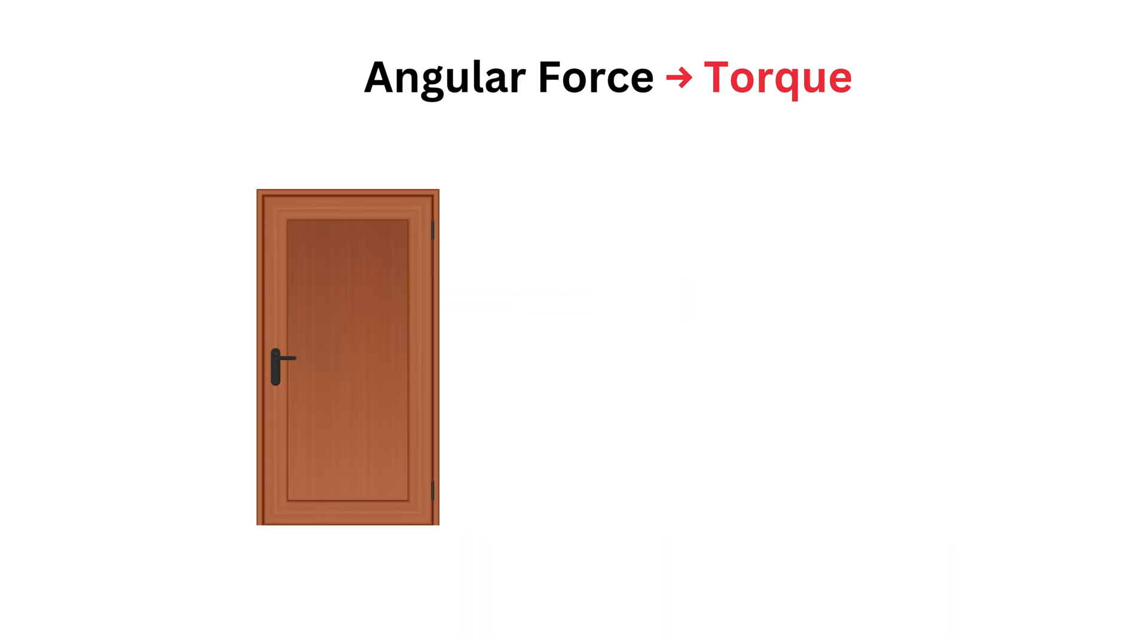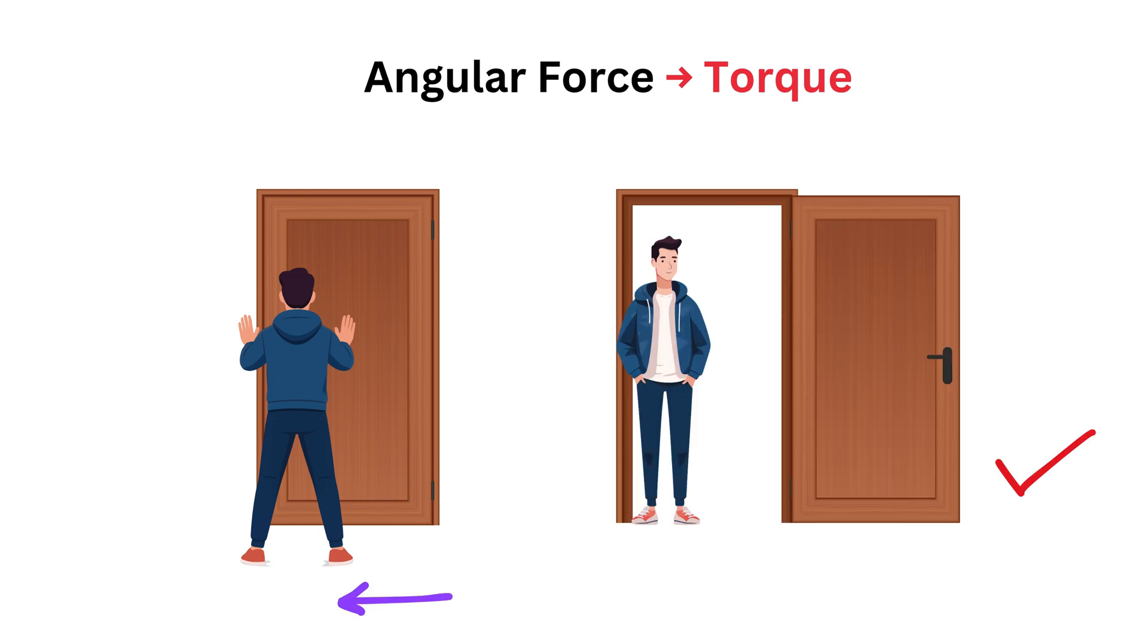Imagine you are trying to open a door. You know that if you push the door near its hinges, it's much harder to open. But if you push it from the edge, far away from the hinges, it opens easily. Why is that? This is because of torque. The same force can create a stronger or weaker turning effect, depending on where you apply it.